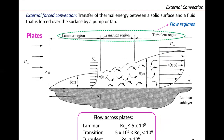External convection is the transfer of thermal energy between a solid surface and a fluid forced over the surface by a pump or fan. We can have different flow regimes — laminar, transitional, and turbulent — determined using the Reynolds number. The ranges to decide which regime applies are given in the textbook. These numbers may vary slightly depending on the author.